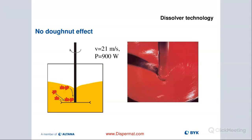We have obviously no donut effect in this case, where we are running at 21 meters per second with tips okay, but putting in way too much energy. The product isn't moving all that well — the viscosity is really high and we are having trouble seeing a donut. Could also be that we are still dispersing, but because of the high viscosity, it's just not possible that an actual donut forms.